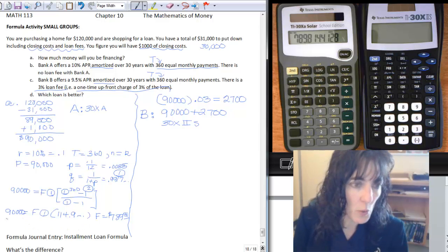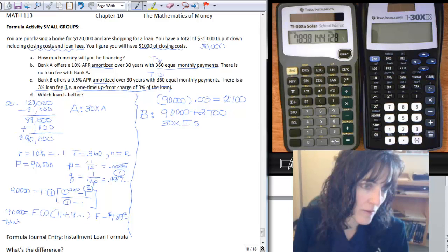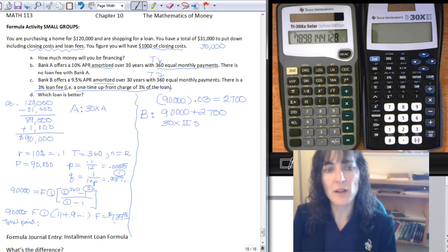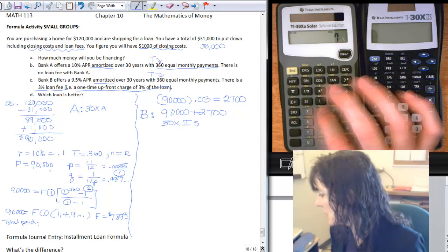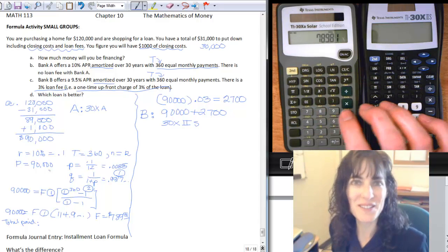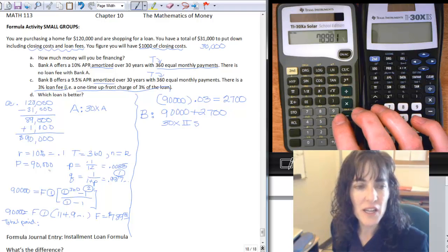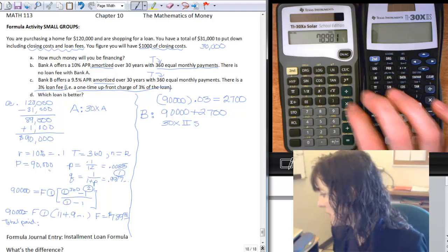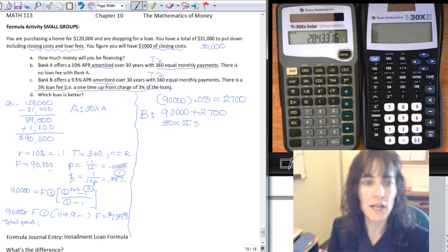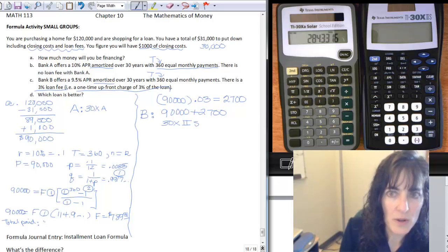$789.81. Now to find the total that I paid, because on some problems you will be asked to do that, you take the $789.81. So I'm going to retype it in, $789.81, so that the pennies are accurate. And then multiply that, because I made 360 payments of that size. So times 360. And that gives me the total amount that I paid for this loan. So it's $284,331.60.